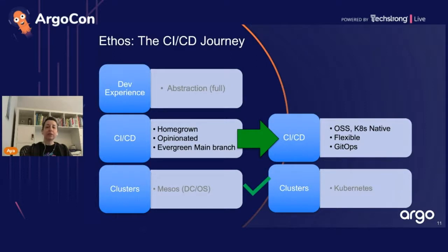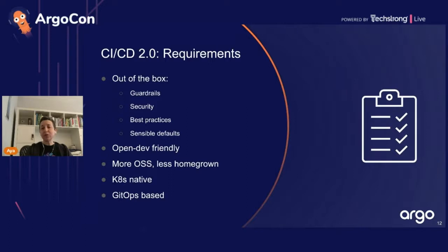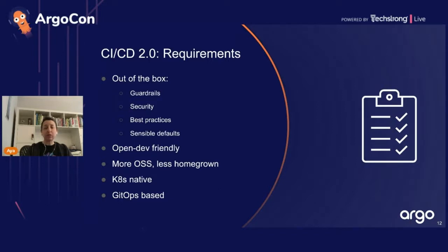This need for flexibility and speed propelled us to work on our next version of CI/CD. Our requirements: we want to provide tenants with a paved path out of the box with best practices and security, but make it flexible and customizable. We want to be open dev-friendly within Adobe with ability to share logic across teams, use open source, leverage Kubernetes and its rich ecosystem, be Kubernetes native, and use GitOps.